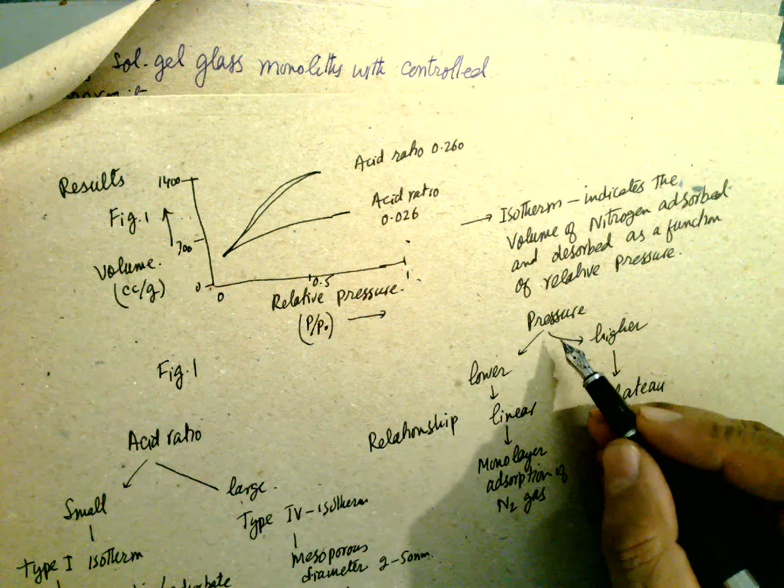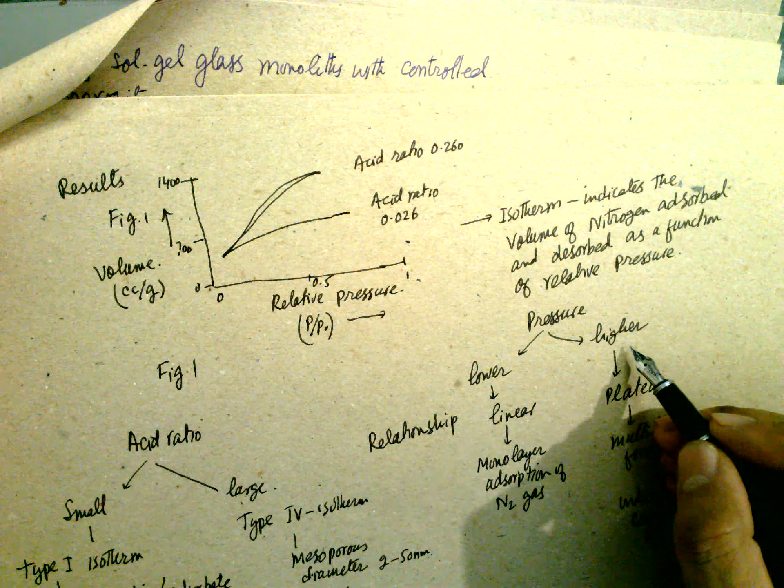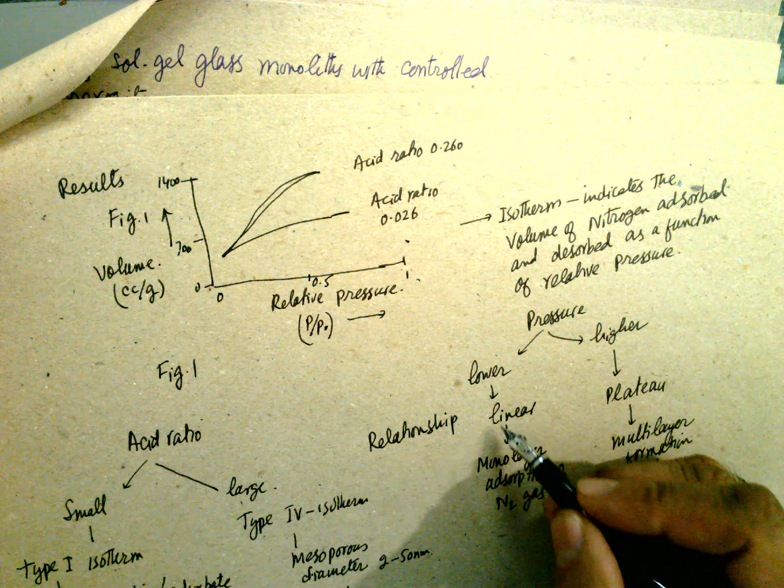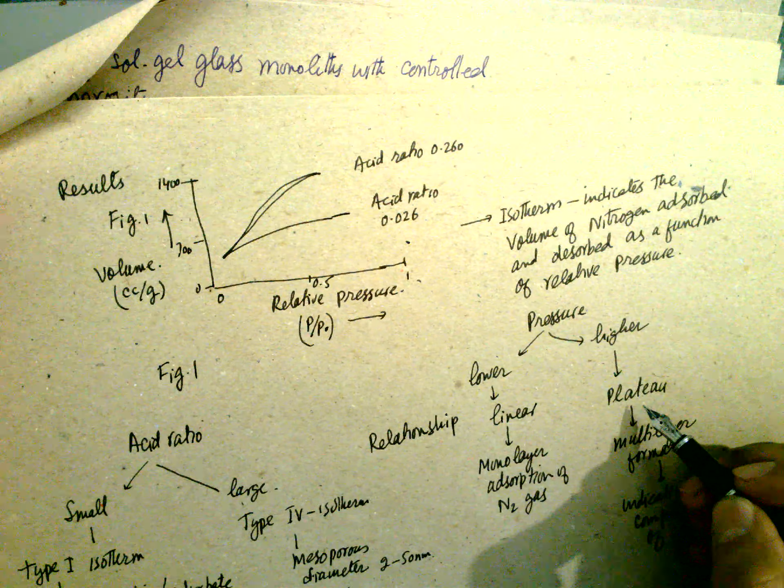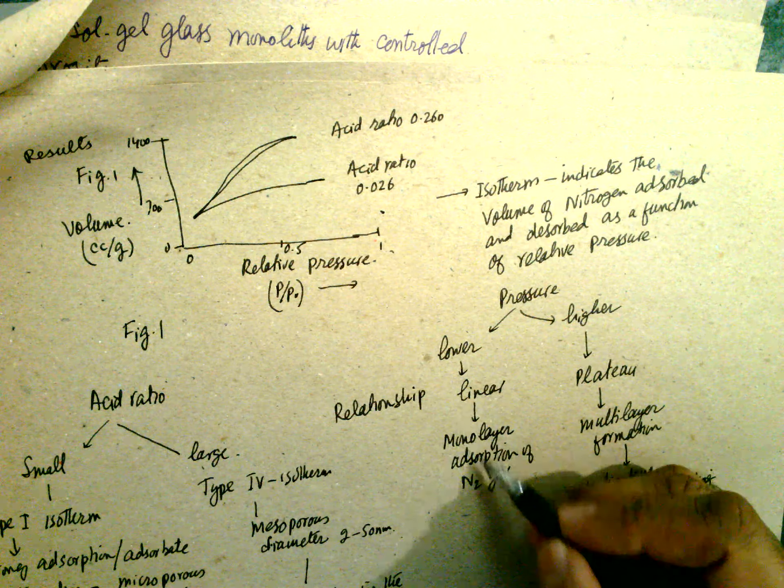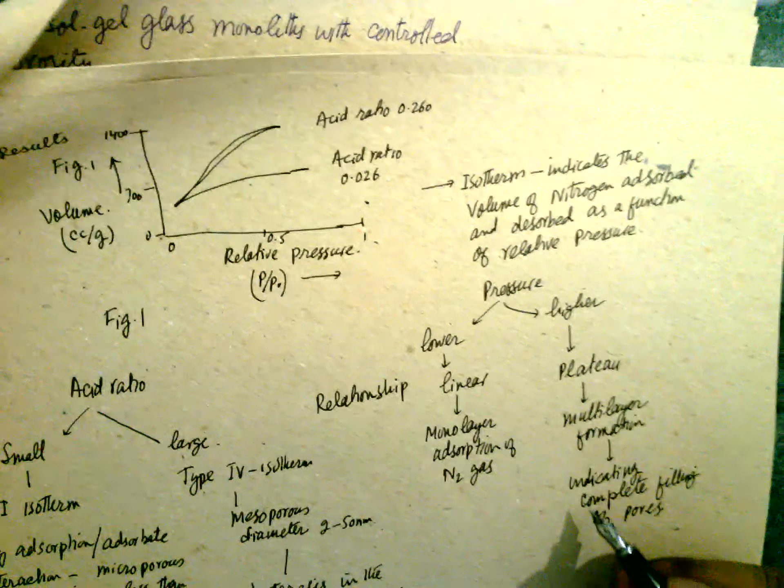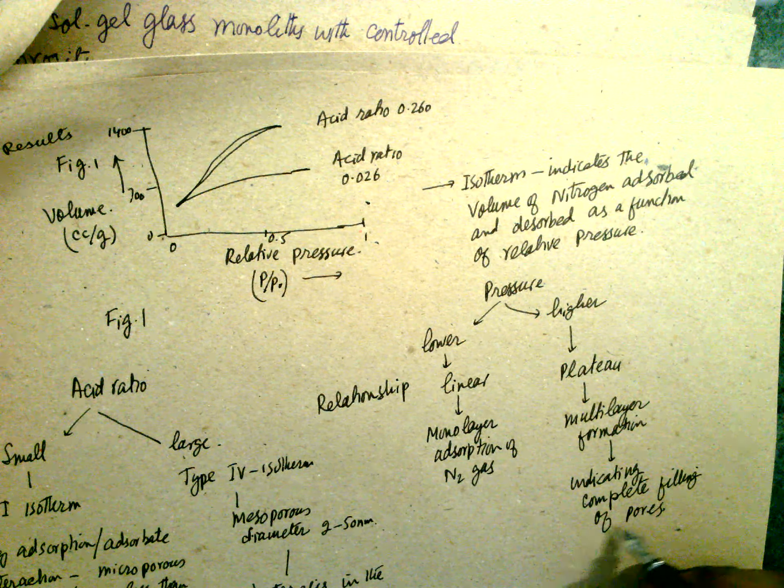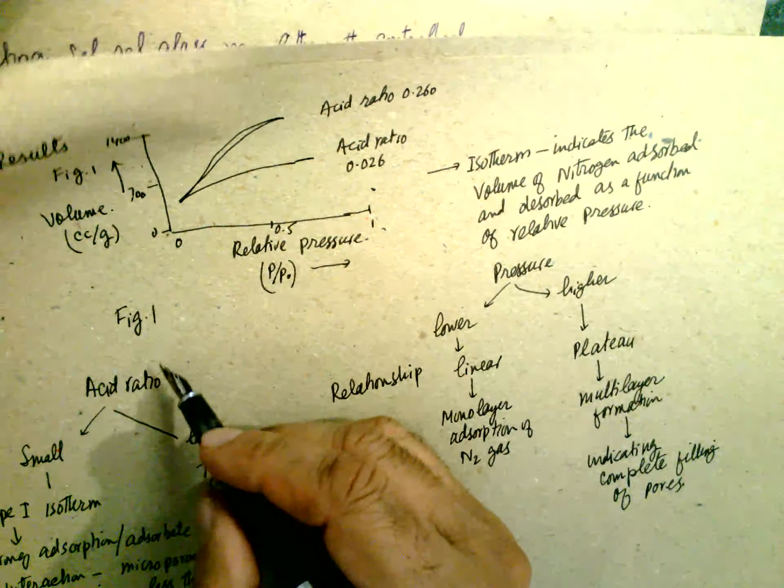Isotherm indicates the volume of nitrogen adsorbed and desorbed as a function of relative pressure. Lower pressure and higher pressure, it's linear. This is linear, and over there is a plateau.